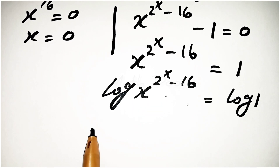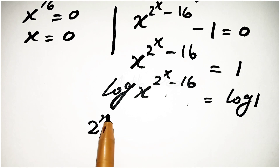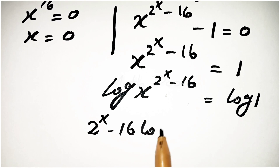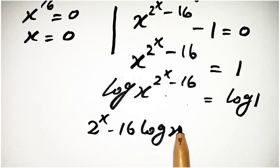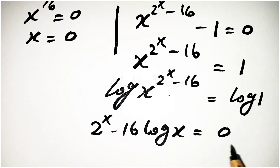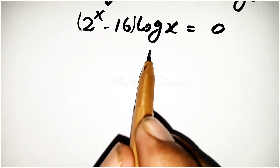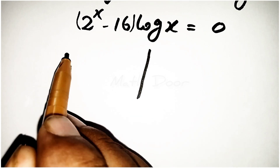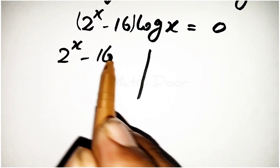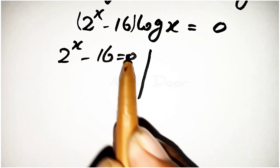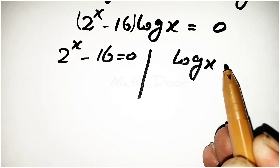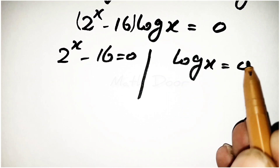According to the logarithmic rule, we write this equation as 2 power x minus 16 times log x is equal to 0, since log 1 is equal to 0. Now we split this into two cases: 2 power x minus 16 is equal to 0, and log x is equal to 0.